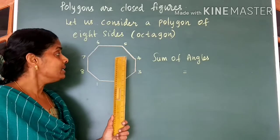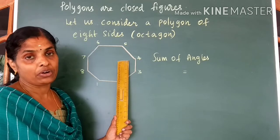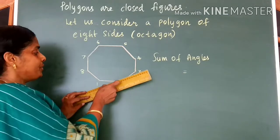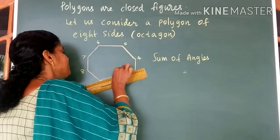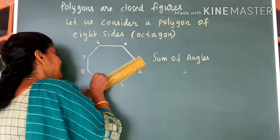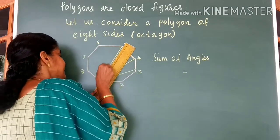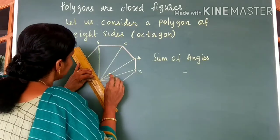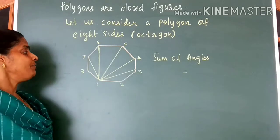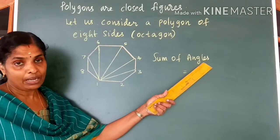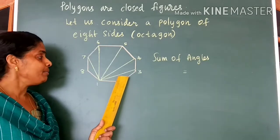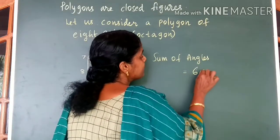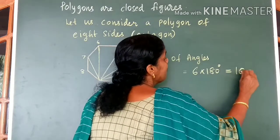Now let us find the sum of angles of an octagon. From one vertex, let us draw diagonals to the opposite vertices. You will be able to draw five diagonals. Counting the triangles formed: 1, 2, 3, 4, 5, 6. So the sum of angles of an octagon is equal to 6 into 180 degrees, which gives you 1080 degrees.